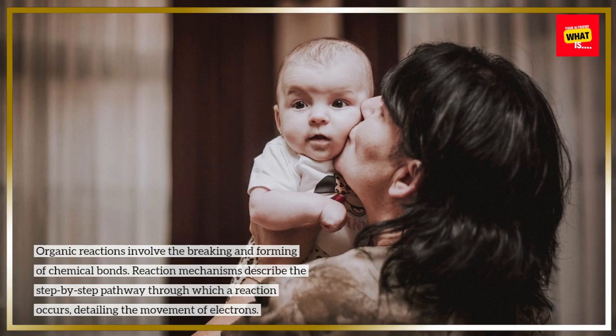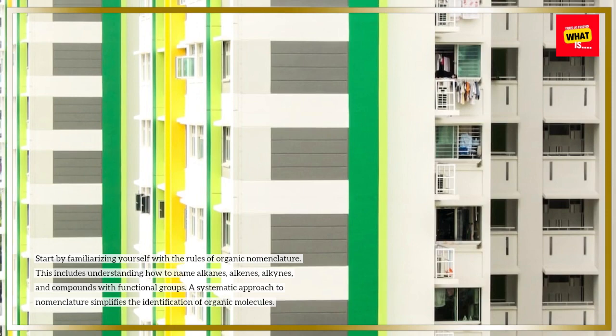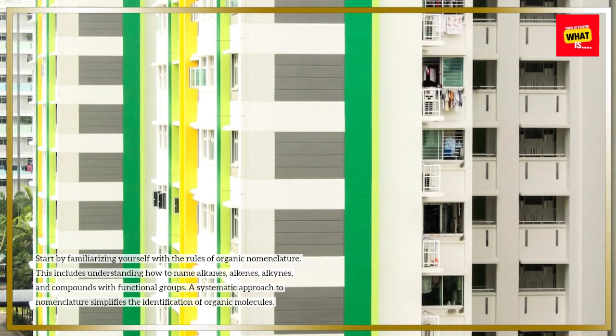How to understand carbon-based compounds. Learn organic nomenclature. Start by familiarizing yourself with the rules of organic nomenclature. This includes understanding how to name alkanes, alkenes, alkynes, and compounds with functional groups. A systematic approach to nomenclature simplifies the identification of organic molecules.